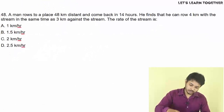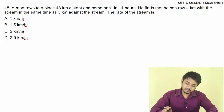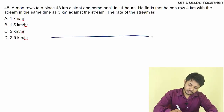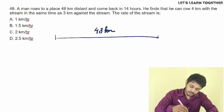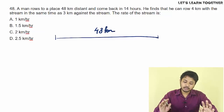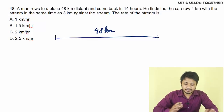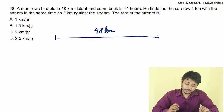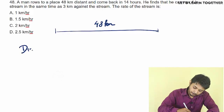Next question. A man rowed to a place 48 km away and came back in 14 hours. He finds that he can row 4 km with the stream and 3 km against the stream in the same time. The rate of the stream is to be found. The distance is 48 km and total time is 14 hours.